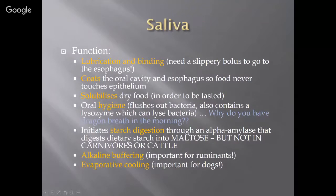The function of saliva — it's needed for lubrication and binding. A small chunk of food that you chew or masticate becomes a bolus. We need it slippery so it can go through the esophagus. Saliva binds it together and lubricates it as it travels through the esophagus. The saliva coats the oral cavity and esophagus so food never touches the epithelium, which is important because our epithelium is very fragile and healing takes energy.